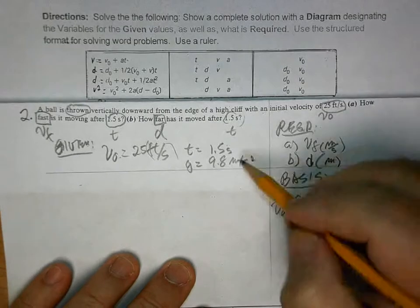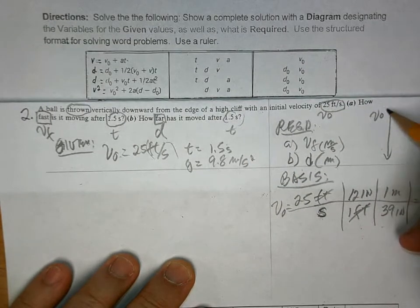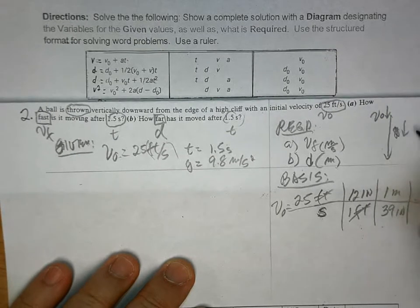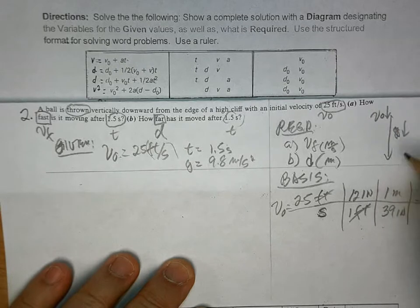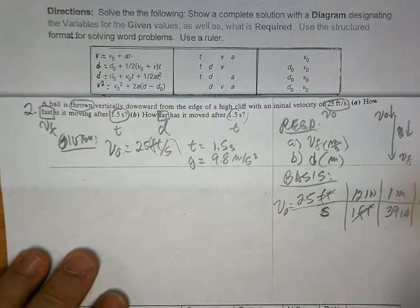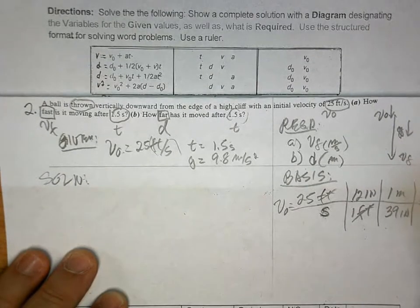So, here's the diagram for this is that you have V0 is going down. Acceleration is also going down. So, they have to have the same sign. That means it gets faster. So, VF has to be greater than V0.